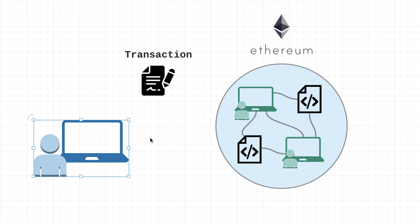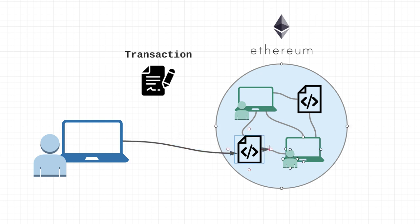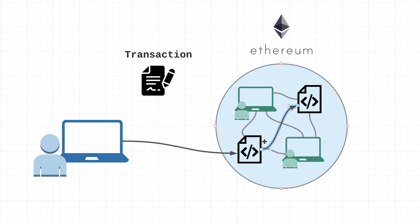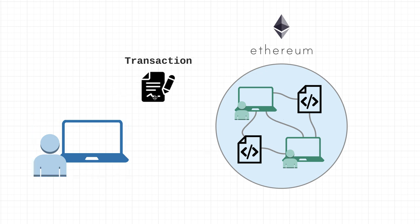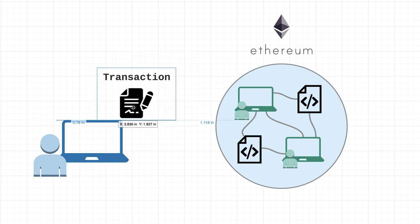Contracts, however, once initially kicked off by an EOA, can call other contracts as part of their execution. So in the Ethereum network, contracts can indeed call other contracts — they just can't initiate the process. The process has to be initiated by an account with a private key.